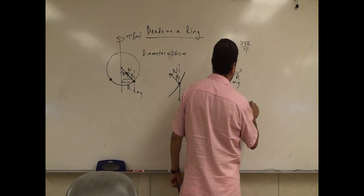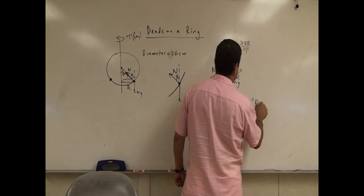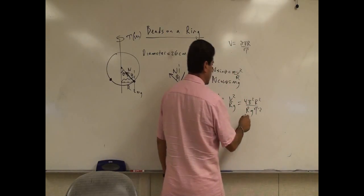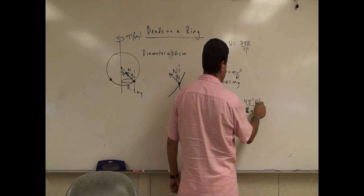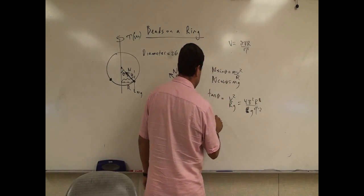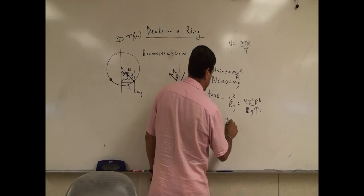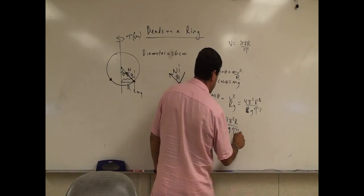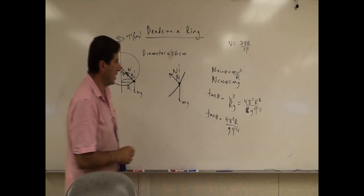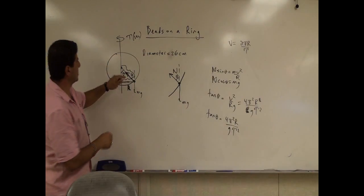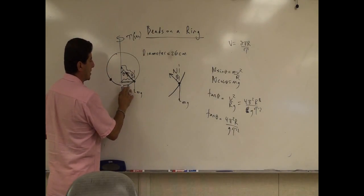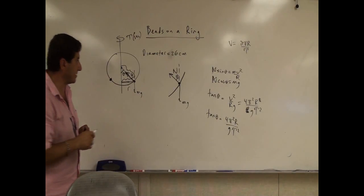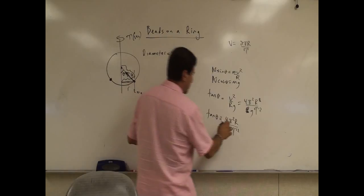2 pi times the effective radius divided by the period. Then we put it in here. We get here 4 pi squared r squared over the period squared. And then we have here rg. One of the r's cancels. And we get here tangent of theta is 4 pi squared r over g period squared. So one of the r's canceled. And so I can call this r little r.